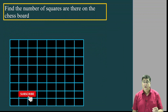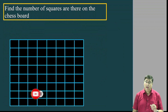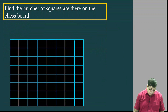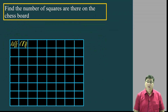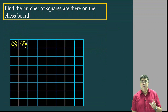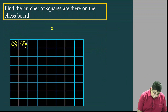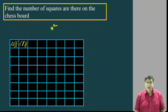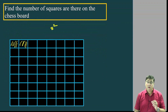First and foremost, how many squares are on the chessboard? A unit square is 1 into 1. This is a 2 into 2 square.